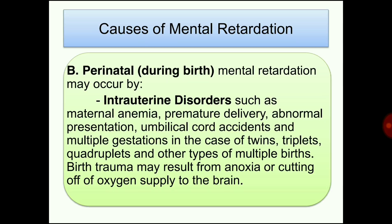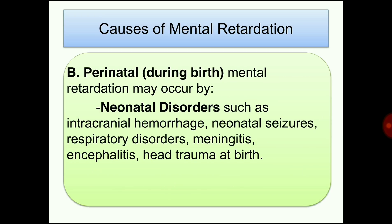Perinatal causes occur during birth. Intrauterine disorders include maternal anemia, premature delivery, abnormal presentation, umbilical cord accidents, and multiple gestation such as twins, triplets, and quadruplets. Birth trauma may result from anoxia or cutting of oxygen supply to the brain. Neonatal disorders include intracranial hemorrhage, neonatal seizures, respiratory disorders, meningitis, encephalitis, and head trauma at birth.